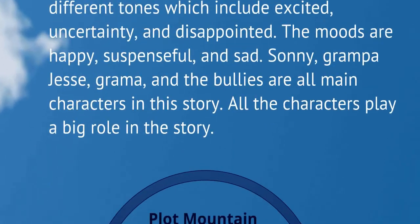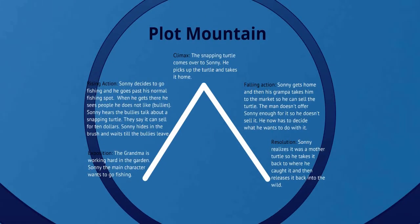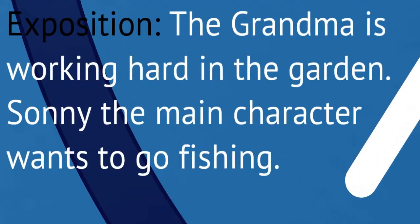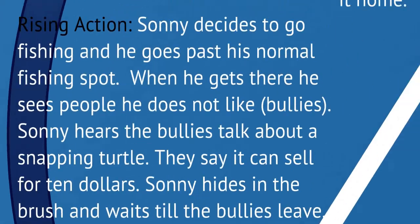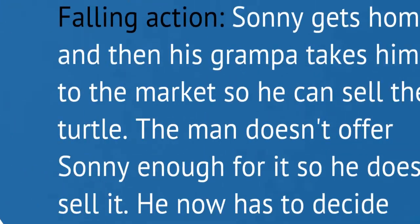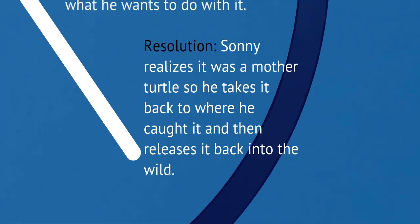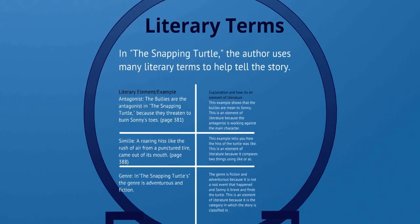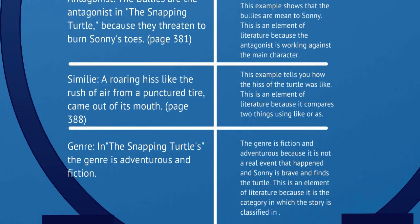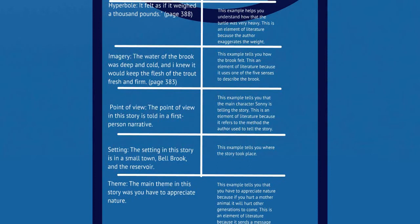In the Prezi presentation, you can read all the details. The plot mountain is very clear: what is the exposition, the rising action, the climax, the falling action, and the resolution. There are also literary elements including hyperbole, imagery, point of view, and setting — what they are and how they are used in the story. Please make sure you are reading it very clearly as it will help you understand.